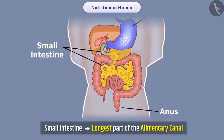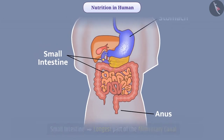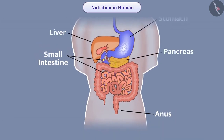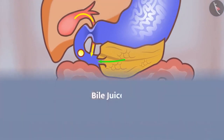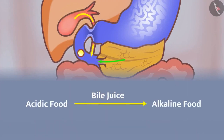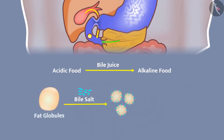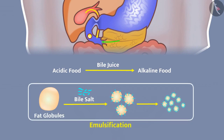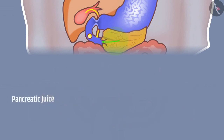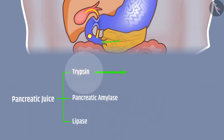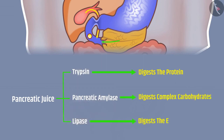The small intestine is the longest part of the alimentary canal. It is extensively coiled and fitted in a compact space. The small intestine receives secretions from the liver and pancreas. Bile juice secreted by the liver makes the acidic food alkaline, and bile salts break down large fat globules into small fat globules, increasing enzyme efficiency. The pancreatic juice contains the enzymes trypsin, pancreatic amylase and lipase. Trypsin digests protein, pancreatic amylase digests complex carbohydrates, and lipase digests emulsified fat.